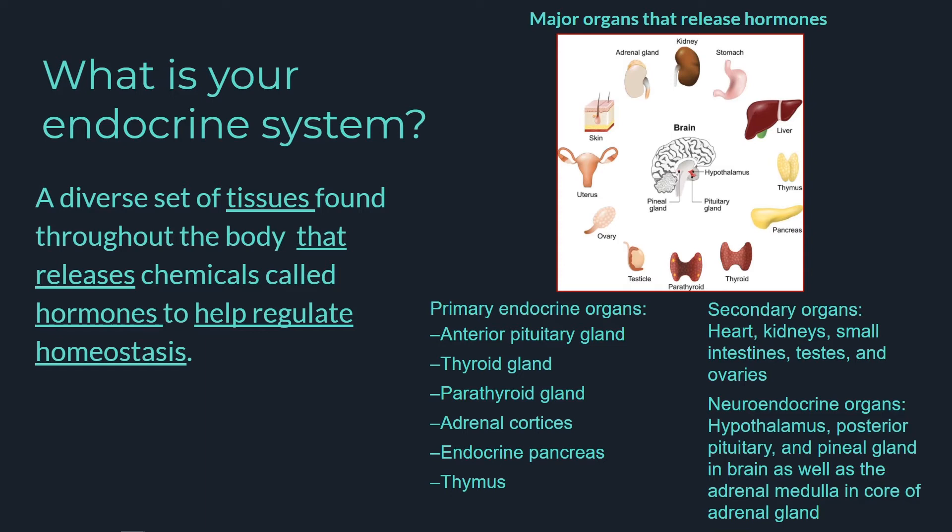But one of the neat things is that there are also secondary hormone-secreting tissues throughout the body, like the heart and the kidneys, whose primary roles are outside of the endocrine system's function. Nevertheless, they release hormones that regulate vital homeostatic functions.